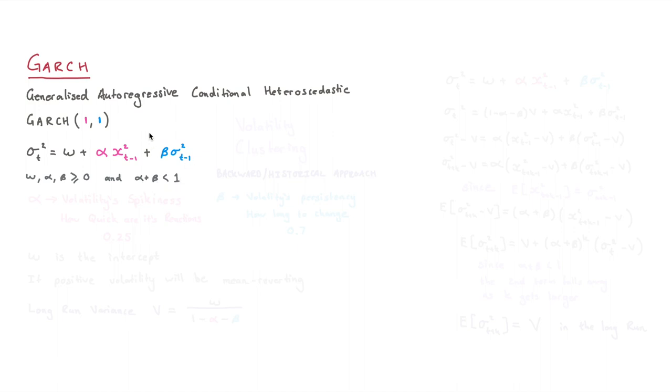Now essentially what we're doing or what we're using this model for is to measure volatility, specifically this idea of volatility clustering. If you had to use a moving average to measure volatility, which is sometimes done,